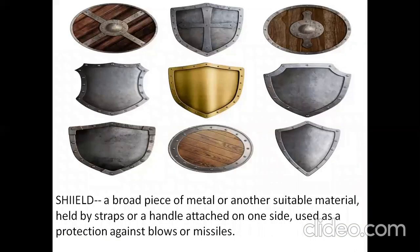In English terminology, what is shielding? As provided in the slide, the actual meaning of a shield is a broad piece of metal or another suitable material which is held by some kind of straps or handles attached on one side. Generally, a shield means a broad piece of metal.